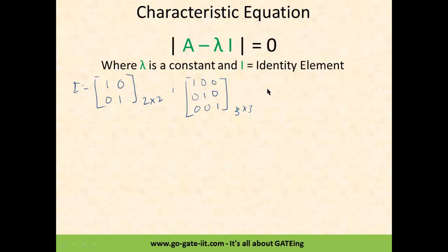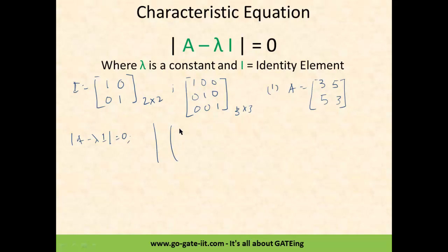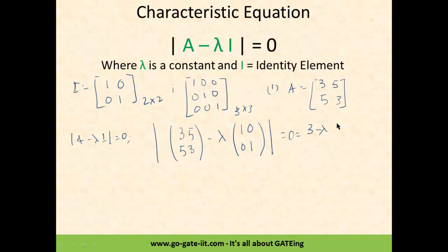Let's jump into an example where we can see the characteristic equation. We have a given matrix [3,5; 5,3]. We need to calculate the characteristic equation following A minus lambda I equals 0. So we write [3,5; 5,3] minus lambda times the 2x2 identity matrix equals 0. That gives us the matrix [3-λ, 5; 5, 3-λ], and taking the determinant equal to 0 gives (3-λ)² minus 25 equals 0.